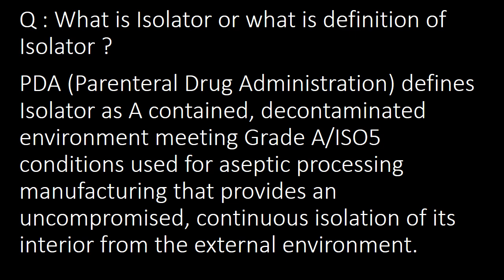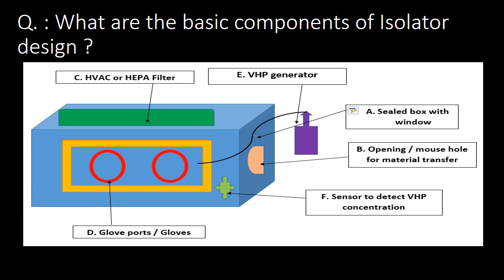The next question: what are the basic components of isolator design? You can refer to the schematic below for easy understanding. Isolator design is majorly divided into six major components: A, B, C, D, E, and F. Component A shows the sealed box with a window — as we know, isolator design is like a sealed box with a window.